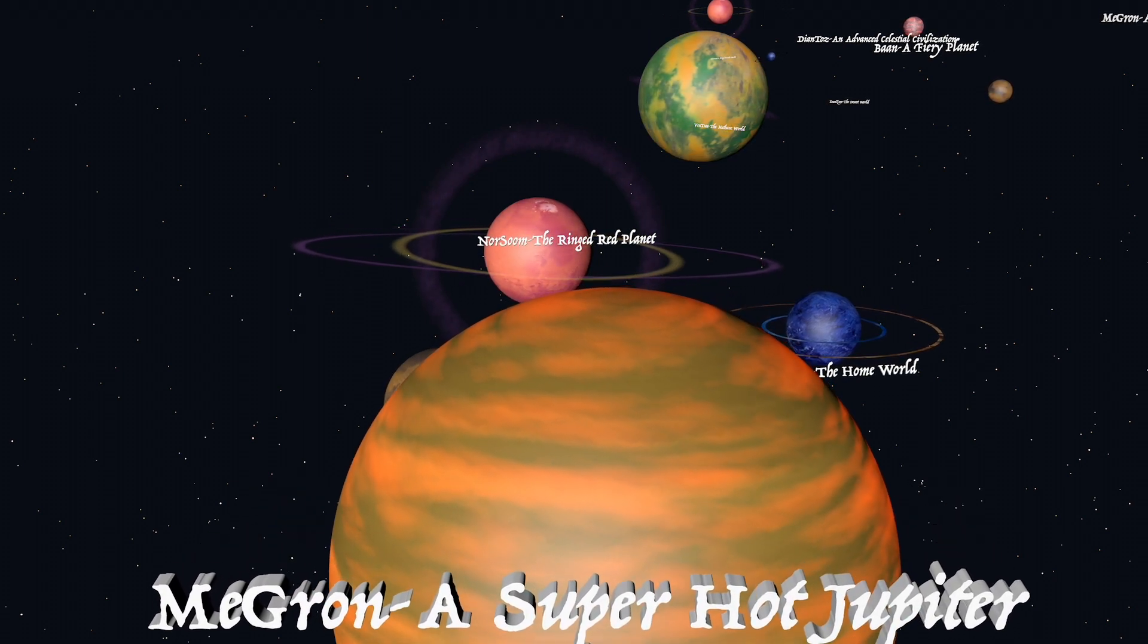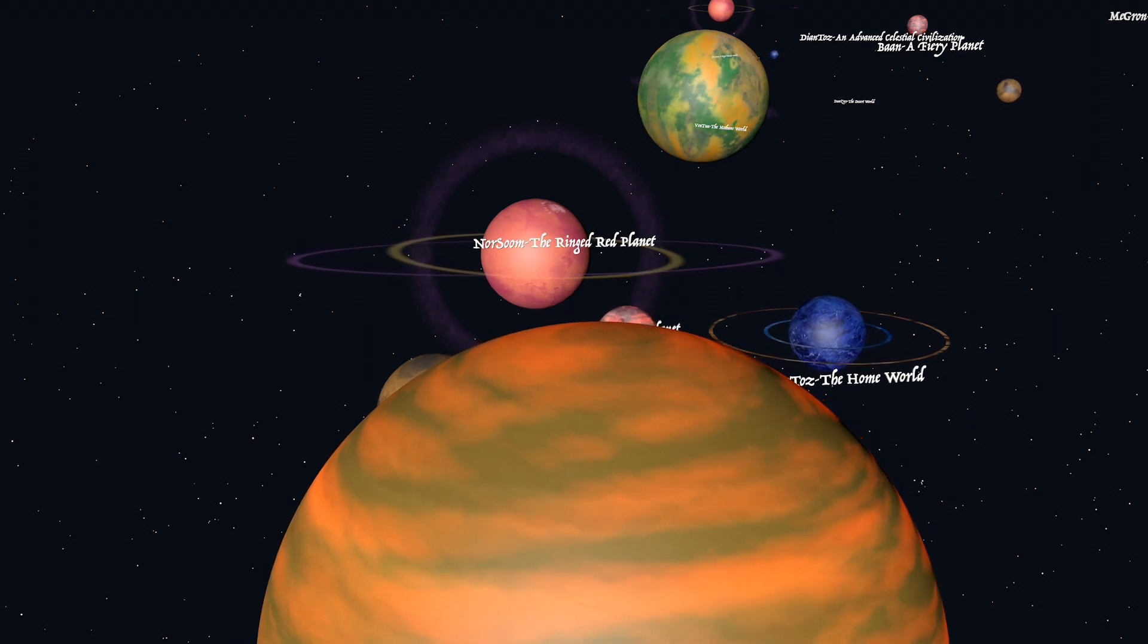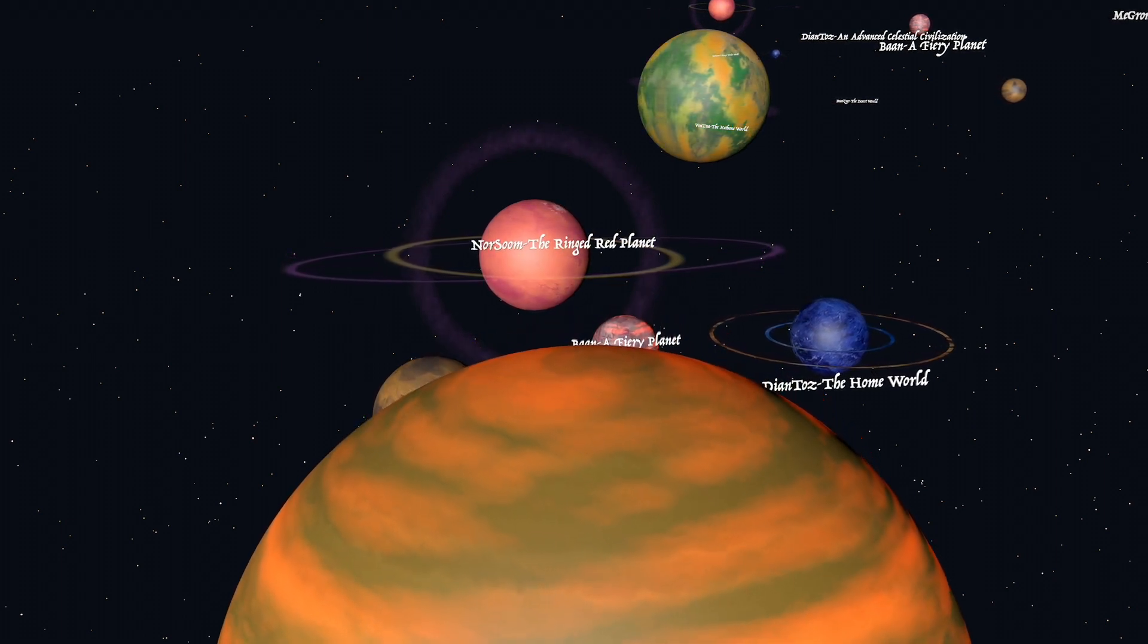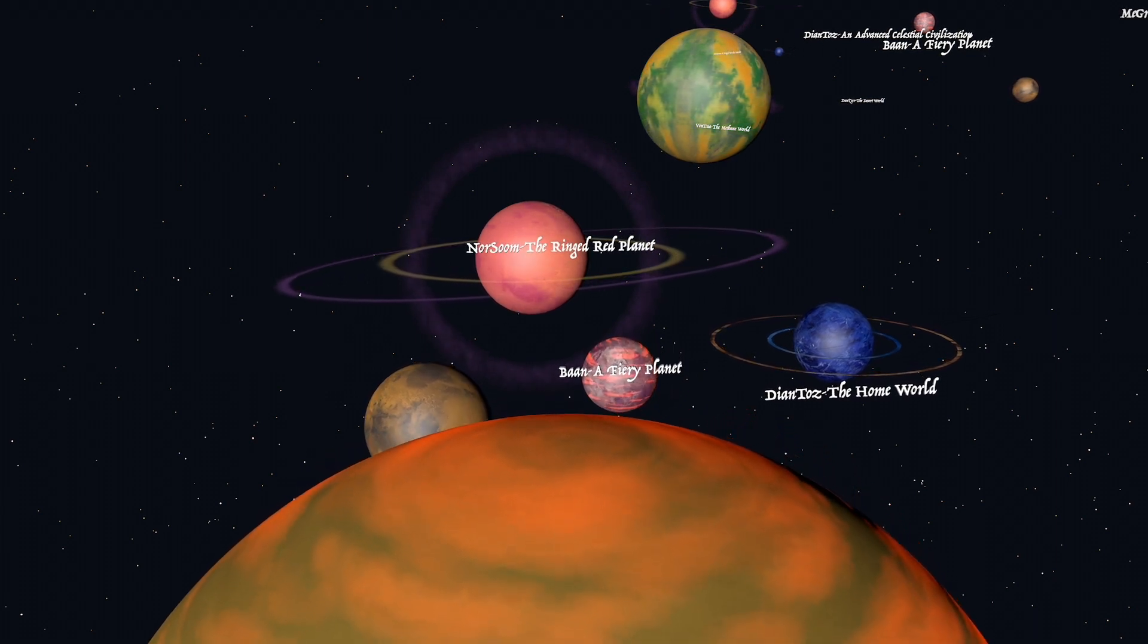Megron is tidally locked, so one side constantly faces our Sun, causing enormous hurricane-force winds and day-night temperature swings of 5,000 degrees or more.